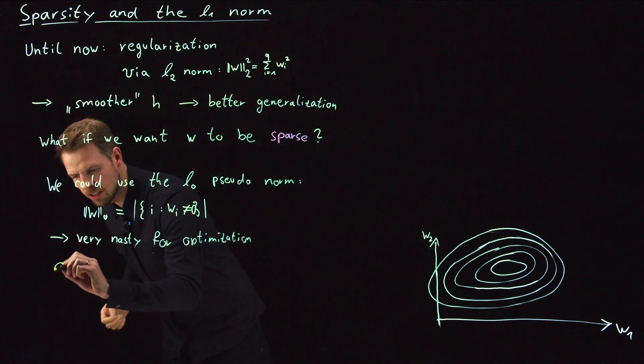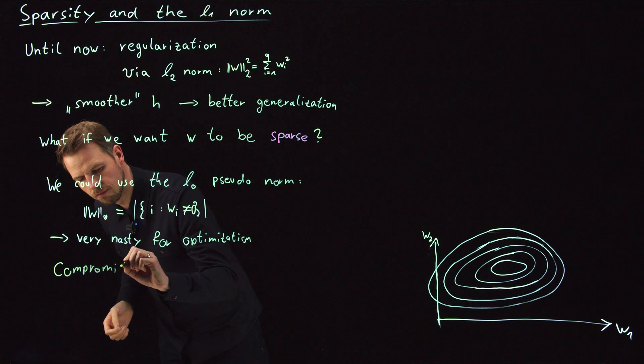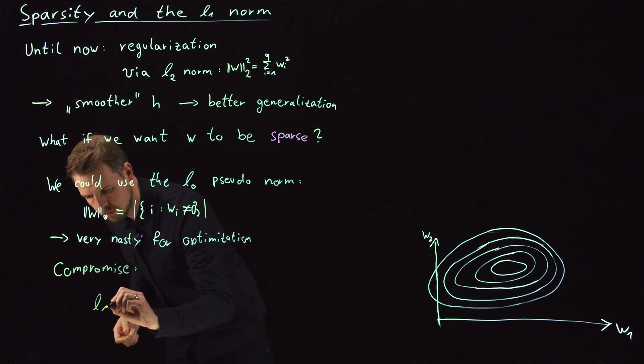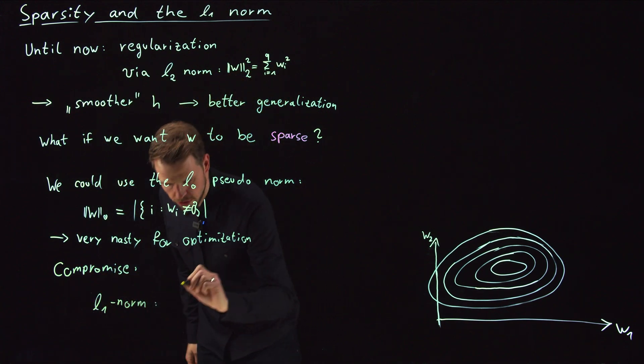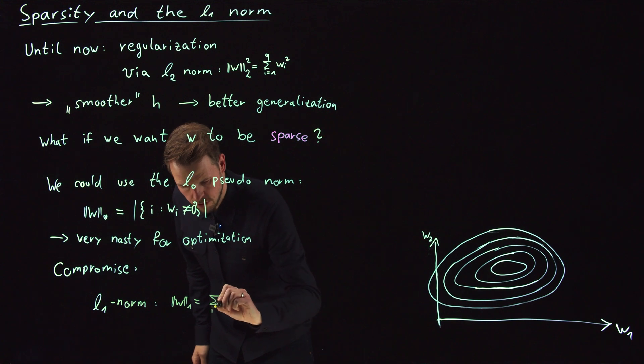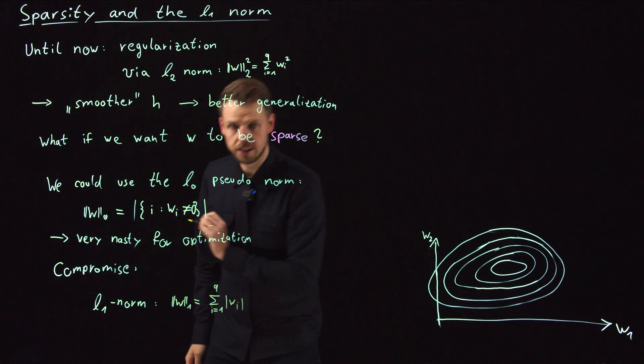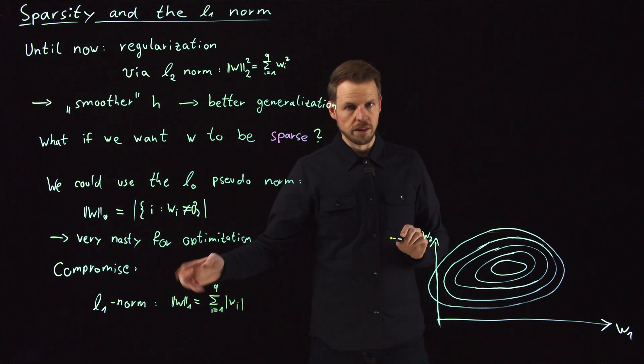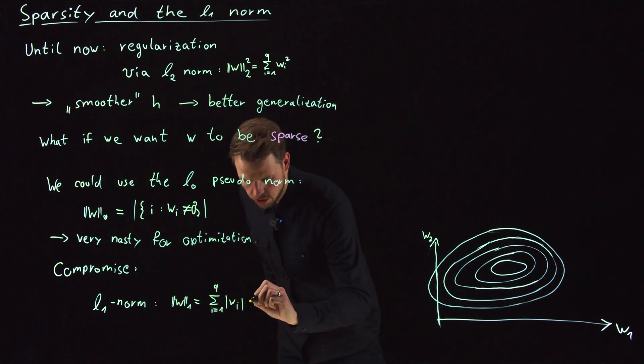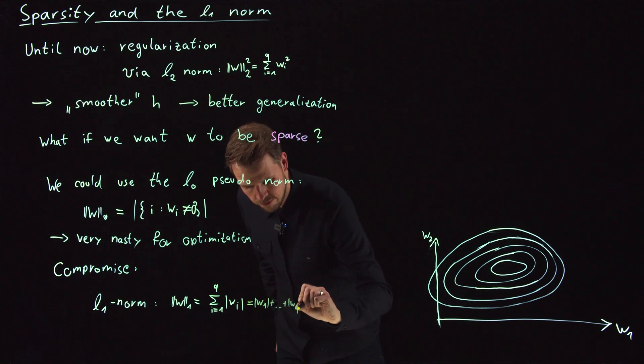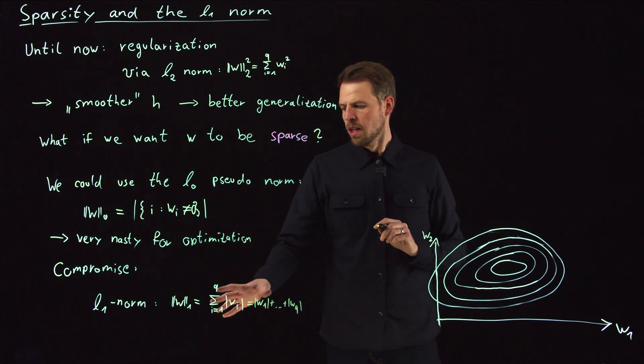So the compromise that we are going to take is the L1 norm. And this is, if we follow the definition of p norms, this is just summing up the absolute values of the individual entries. So you raise everything to the power of one and then take the one square root. So the p norm with one, it just gives you, you sum up the entries one till Q.